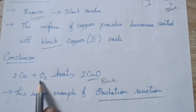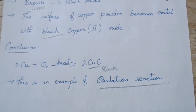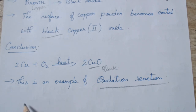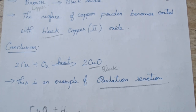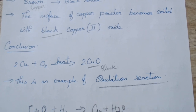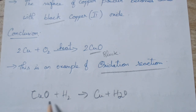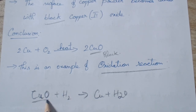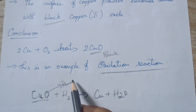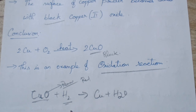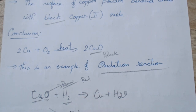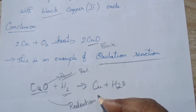Cu plus O₂ gives CuO — this is oxidation. Most oxidation and reduction reactions will take place together. If you pass hydrogen gas — copper oxide plus hydrogen gives copper plus H₂O. This is your reduction reaction. Why is it called a reduction reaction? Reduction means removal of oxygen. From CuO, the O₂ is removed — this is called reduction. Or we can say hydrogen is added to this copper oxide — hydrogen is added, so it is a reduction reaction.